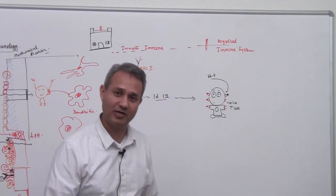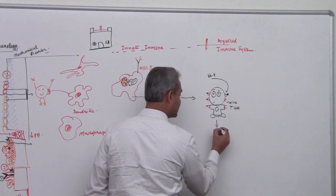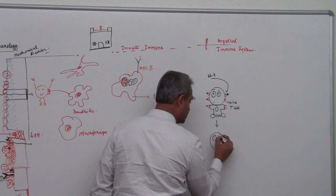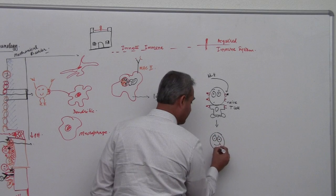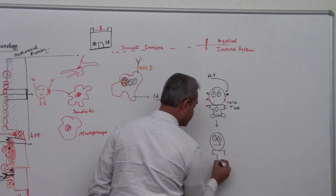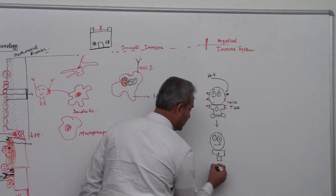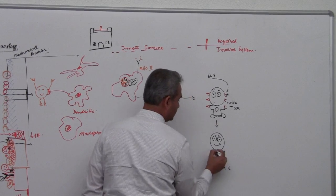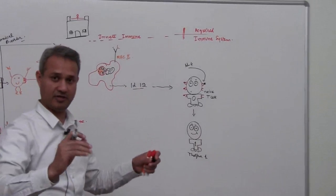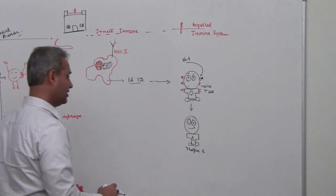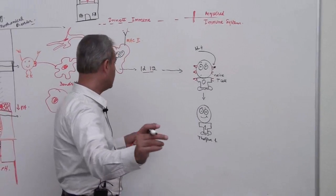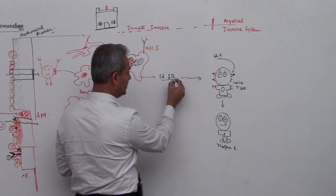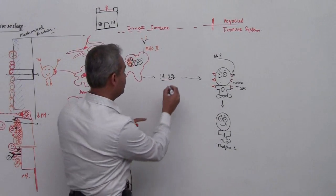All of a sudden he says, oh yes I know what I am supposed to do. Here he gets converted into a more happy and sharp looking T helper 1. T helper 1, if you see he is like a little bit more aware of his surroundings. He knows what his function is. You can remember it by this, look IL-12 has 1 in it and 2.